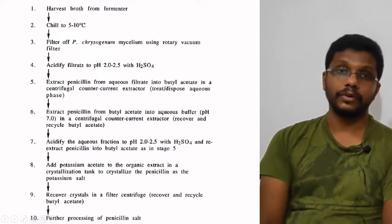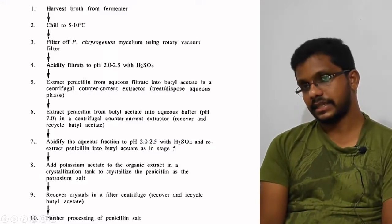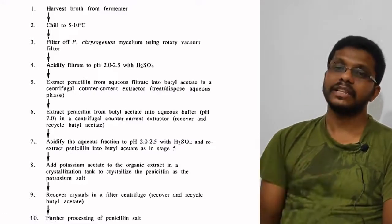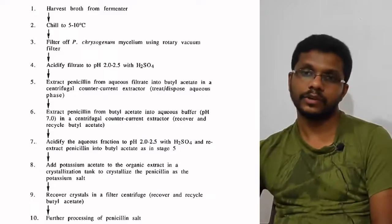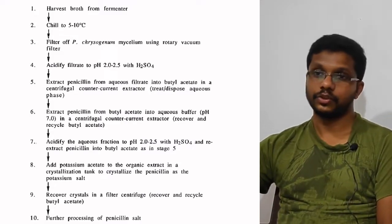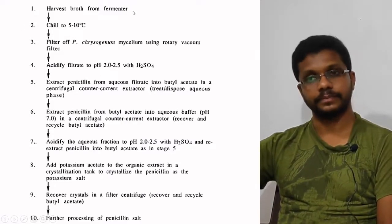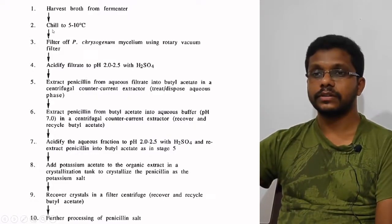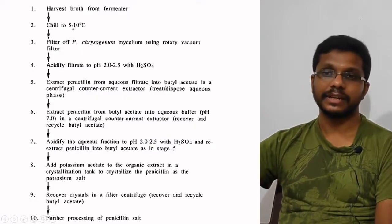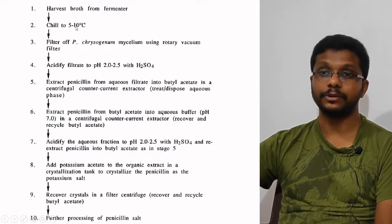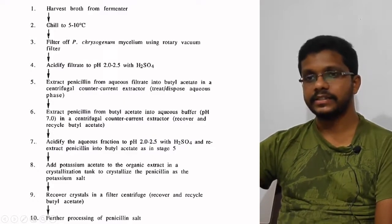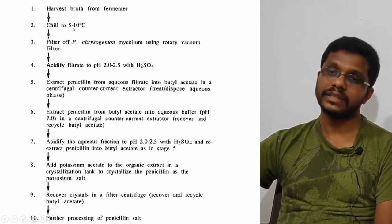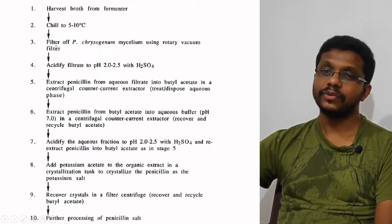As an example of downstream processing, let's look at penicillin, which is very well known. After penicillin fermentation, the first step is to harvest the broth from the fermenter. The second step is cooling — chilling the broth to 5 to 10 degrees Celsius. Then we proceed to filtration.